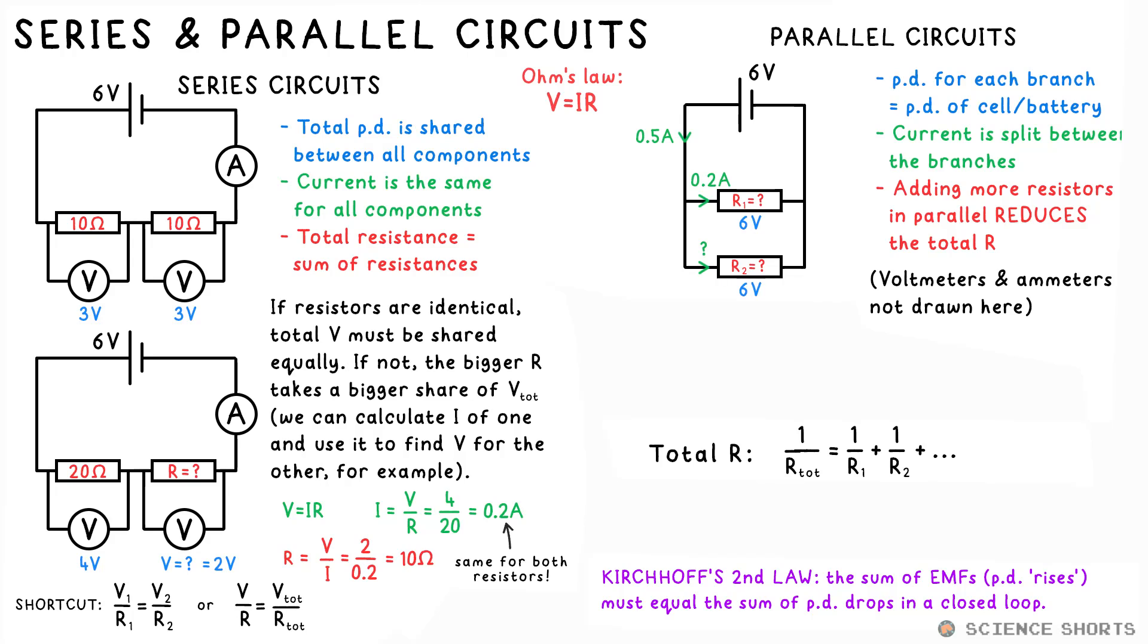So if these two resistors are connected to the 6-volt battery in parallel, you know straight away that the PD for both has to be 6 volts. Voltage is not shared in parallel circuits. If, however, we say 0.5 amps total current is flowing through the battery, and 0.2 amps of that is flowing through the top resistor, that means there must be 0.3 amps flowing through the bottom resistor.